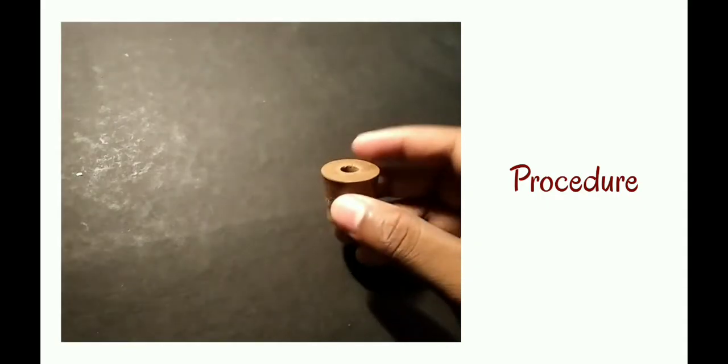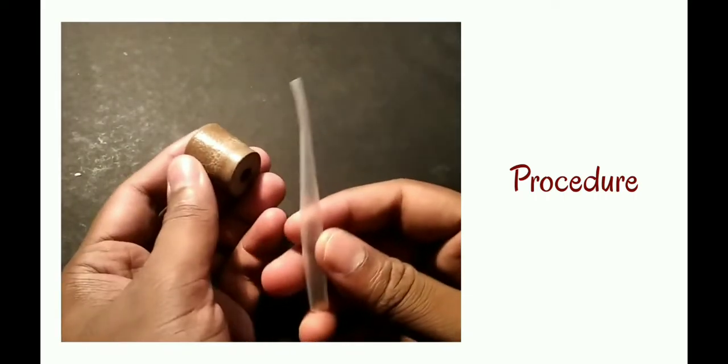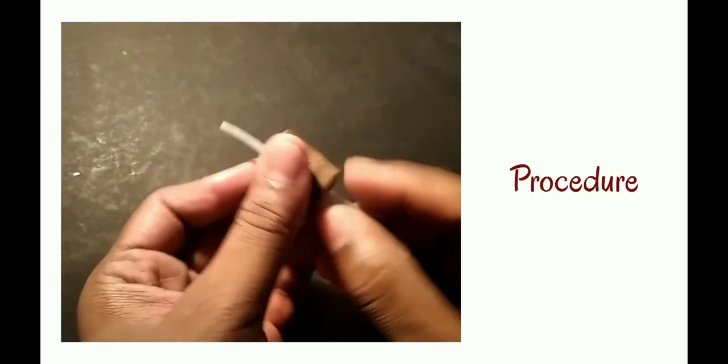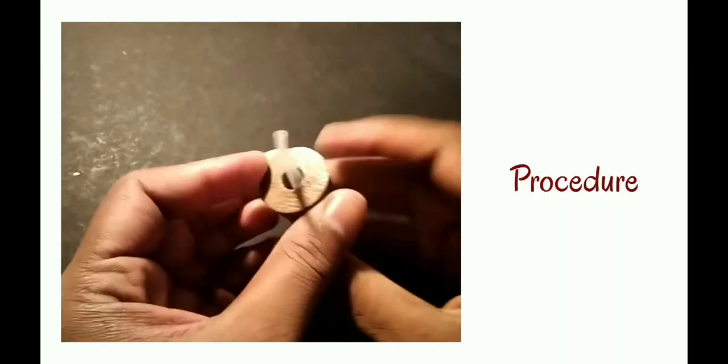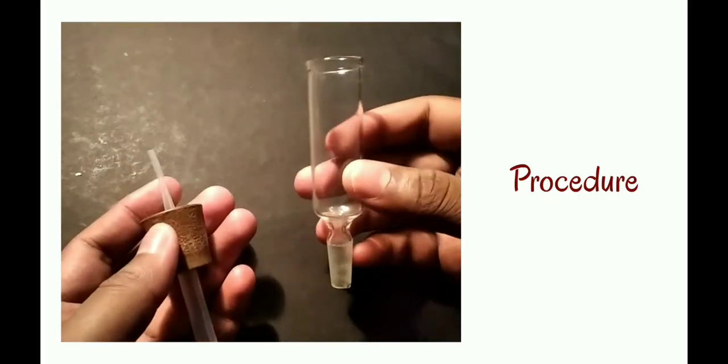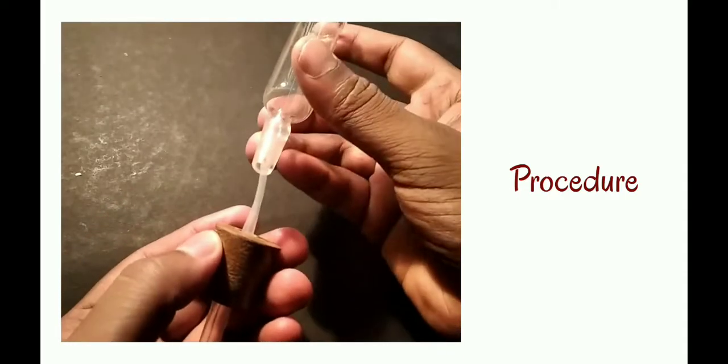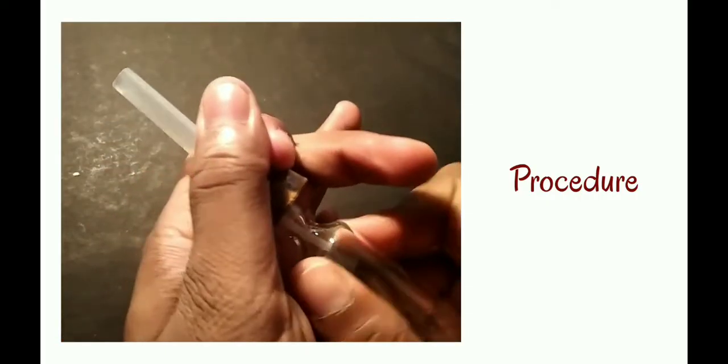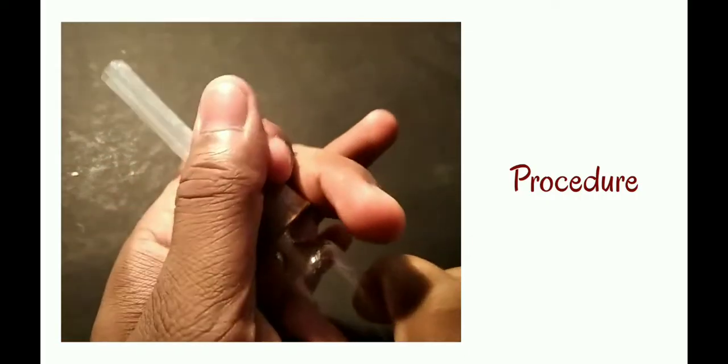Procedure: take the rubber cork and insert the bubbler to the lower portion of the cork like this. Take the water reservoir tube and insert it to the upper portion of the rubber cork. Tightly assemble the apparatus.